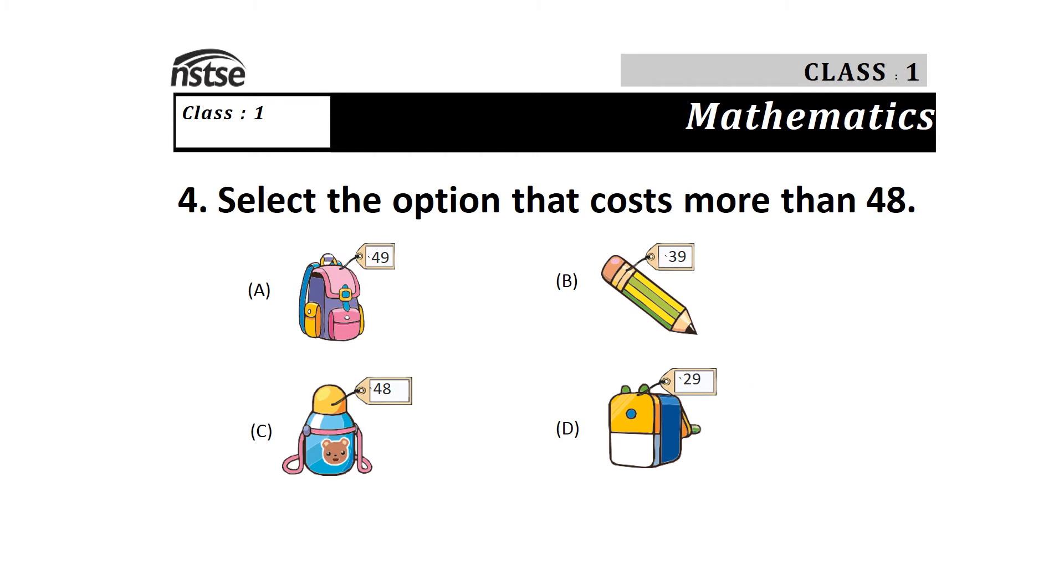Question 4: Select the option that costs more than 48. The options are A) 49, B) 39, C) 48, and D) 29. Which number is more than 48? It will be 49, so the answer is A.